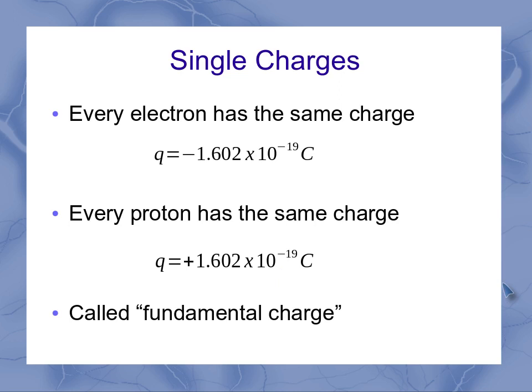So this base amount here we're going to call the fundamental charge. And we give it a symbol of E, and it's 1.602 times 10 to the minus 19th coulombs, where we're not placing the negative or positive out front. Be careful that this E is not an electron.